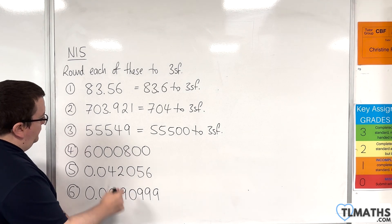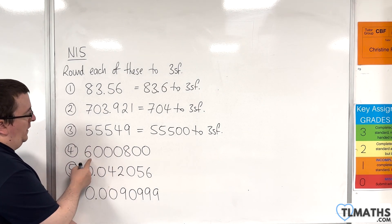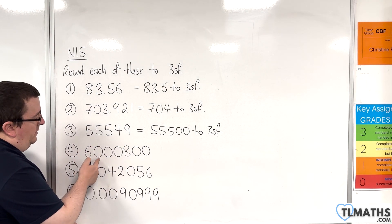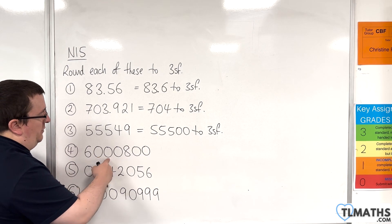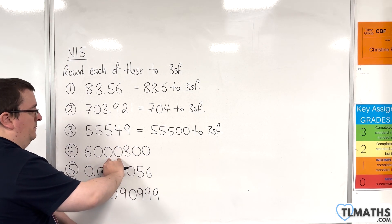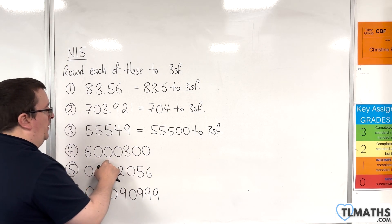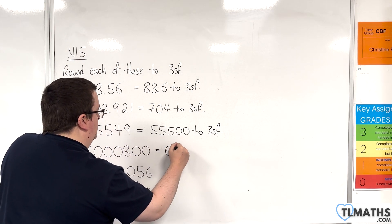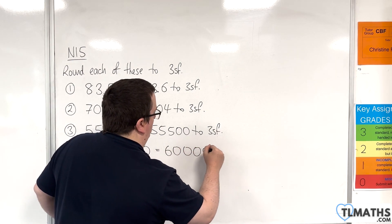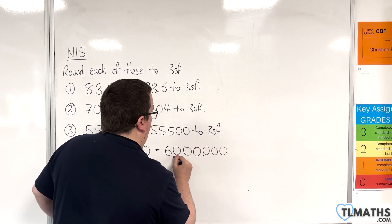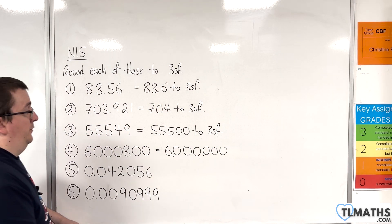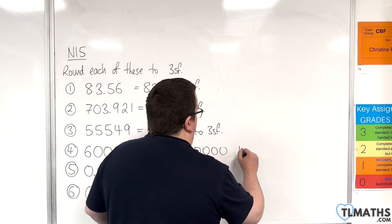Number four: here is the first significant figure, this is then the second, this is then the third. To the right is a zero, so we round this down. And so we're going to have 600 and then four more zeros — so that's six million, to two or three significant figures.